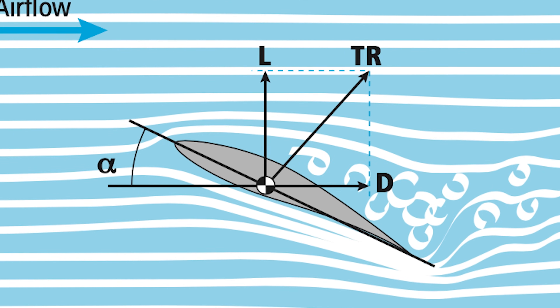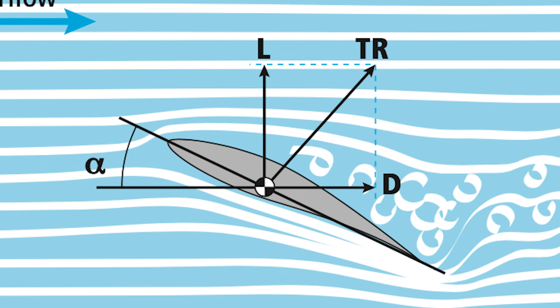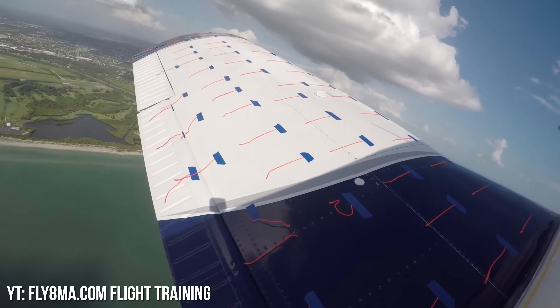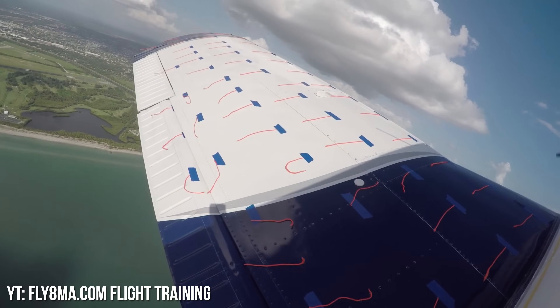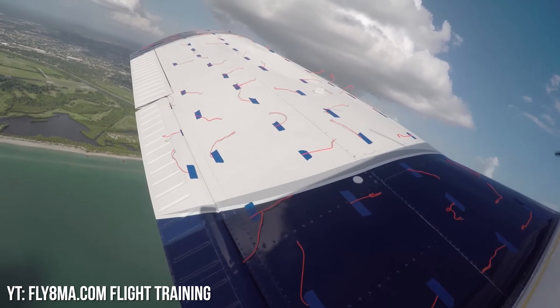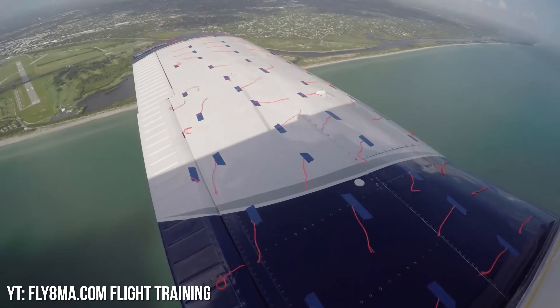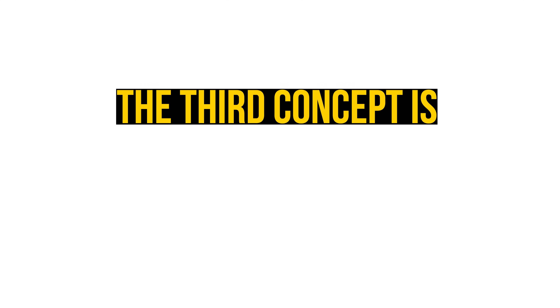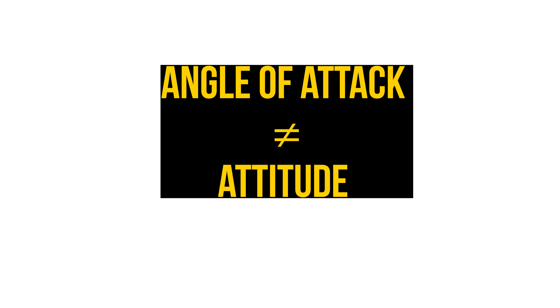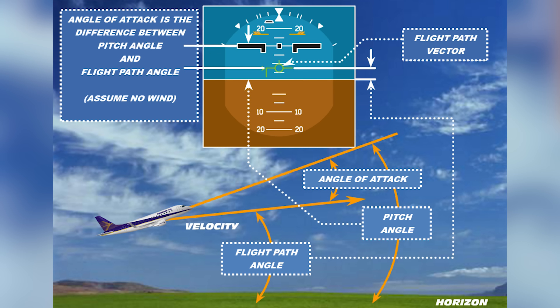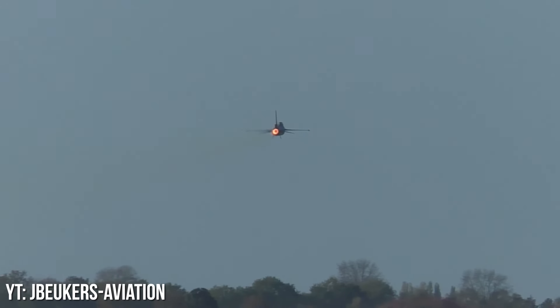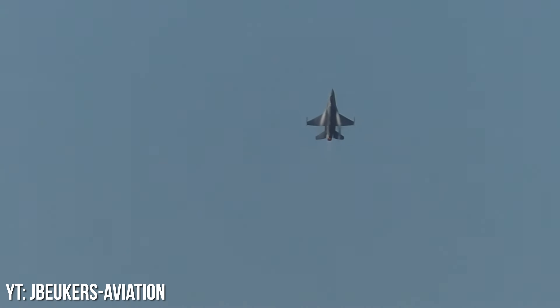Some pilots often believe an airfoil stops producing lift when it stalls. In a stall, the wing does not totally stop producing lift. Rather, it cannot generate adequate lift to maintain the present load factor. The third concept is that angle of attack and attitude aren't synonymous. Attitude is the angle or orientation between the airplane and the horizon, entirely separate from your angle of attack. Think of a fighter jet climbing vertically at 90 degrees in relation to the horizon — if its angle of attack was 90 degrees, it would be piloted by Goose.